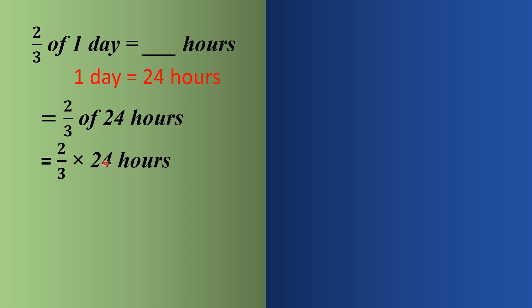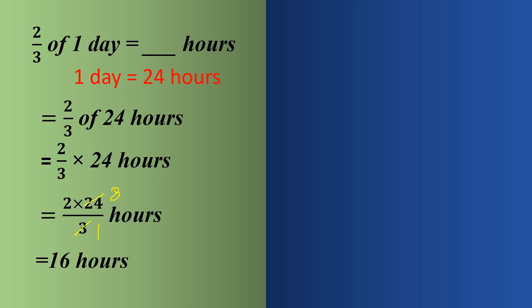We solve by multiplying numerator and whole number. The common divisor of 24 and 3 is 3. Dividing: 3 divided by 3 is 1, and 3 eights are 24. So the final answer is 16 hours.